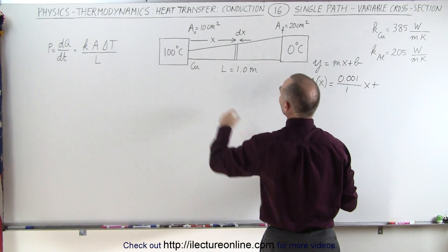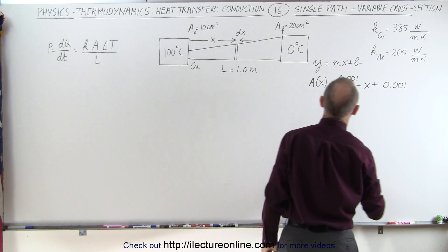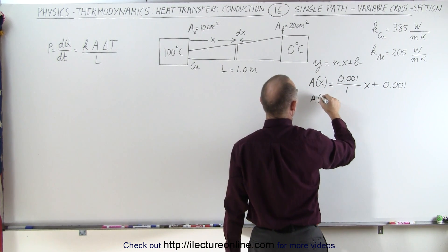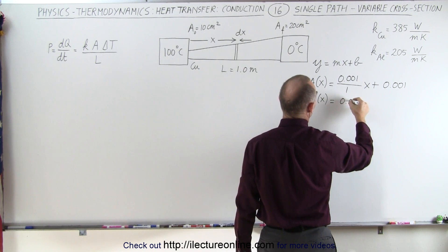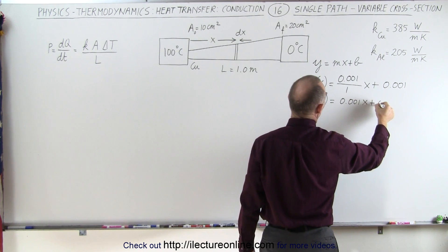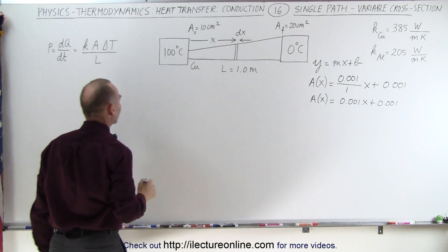And of course, b is where we started at 0.001 square meters. So the equation for the cross-sectional area in terms of x is going to be 0.001x plus 0.001, which is what's going to go in here instead of the constant.